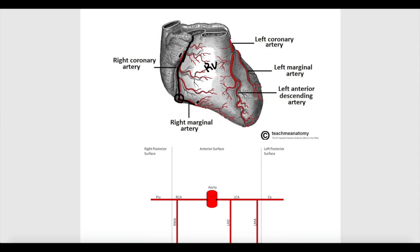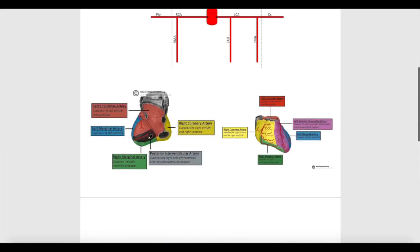In this area, the right coronary artery gives its first branch, which is called the right marginal artery. The right coronary artery gives multiple branches, but we will focus on the main ones. After giving the right marginal artery, it continues posteriorly in the posterior atrioventricular groove.